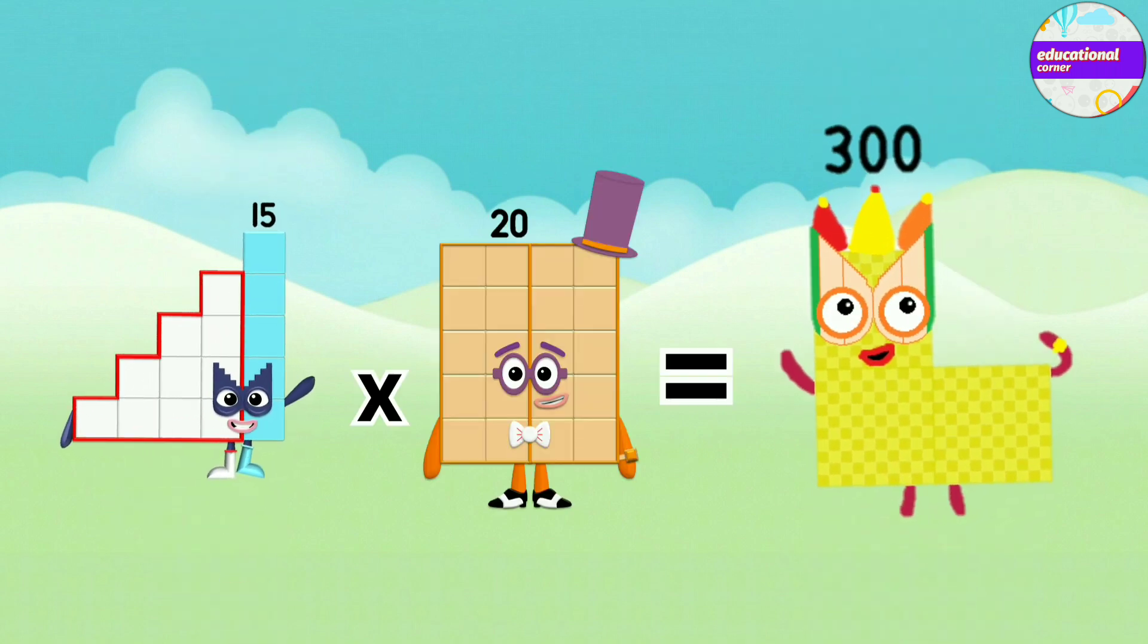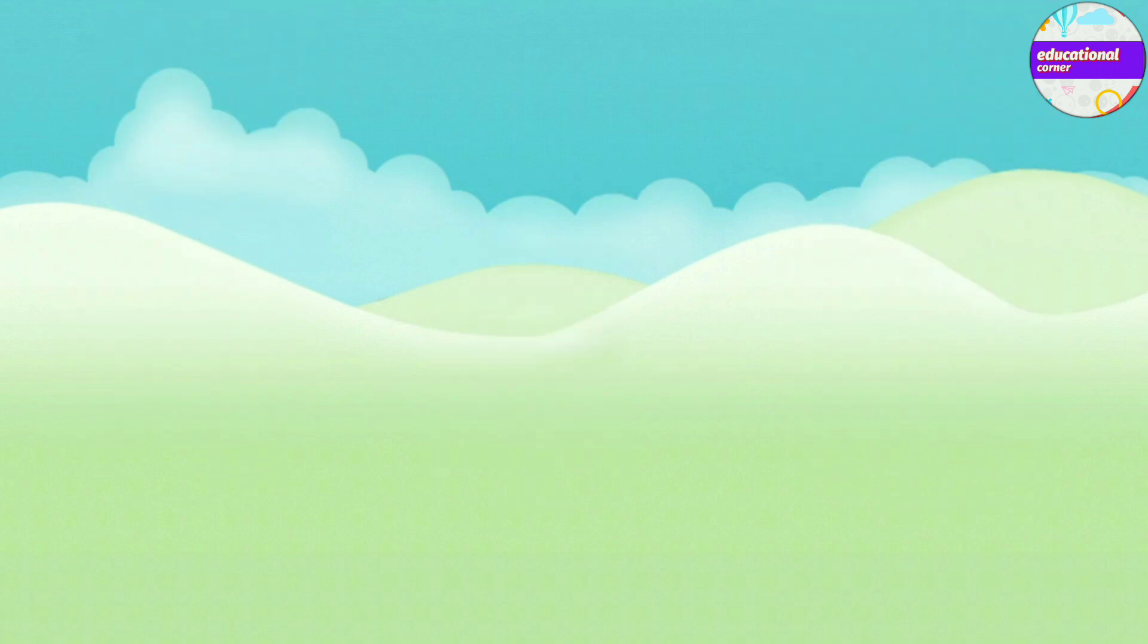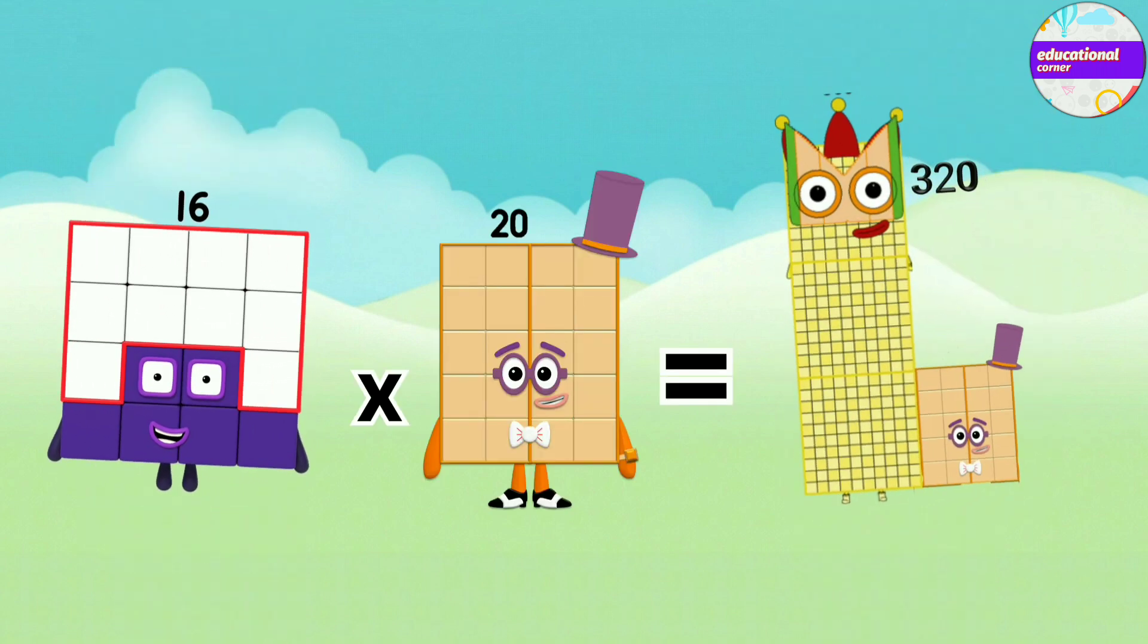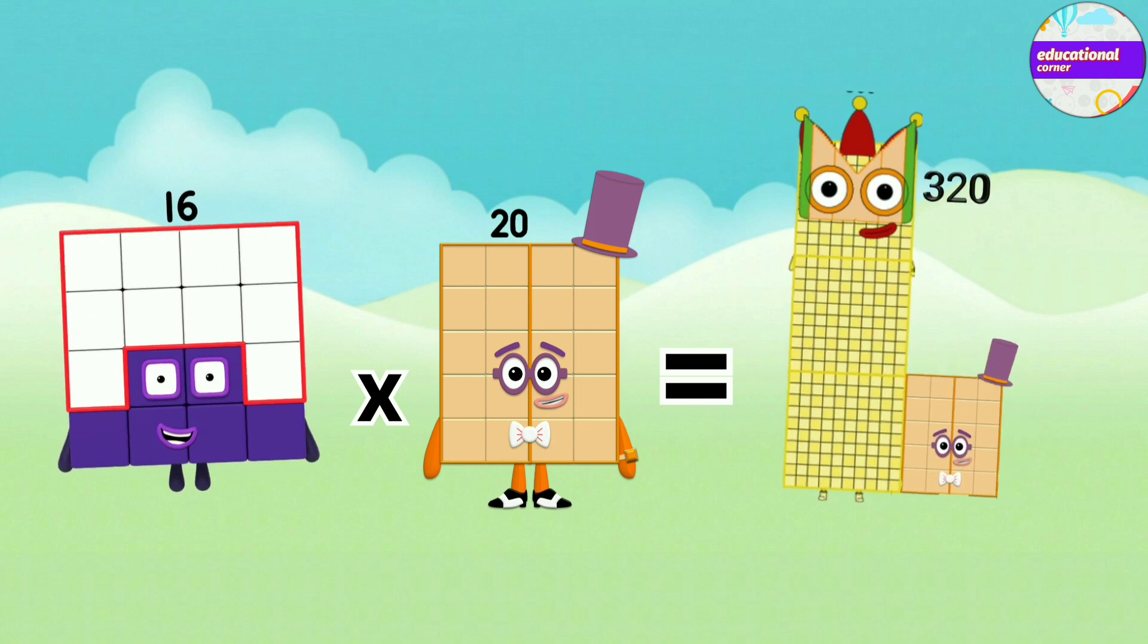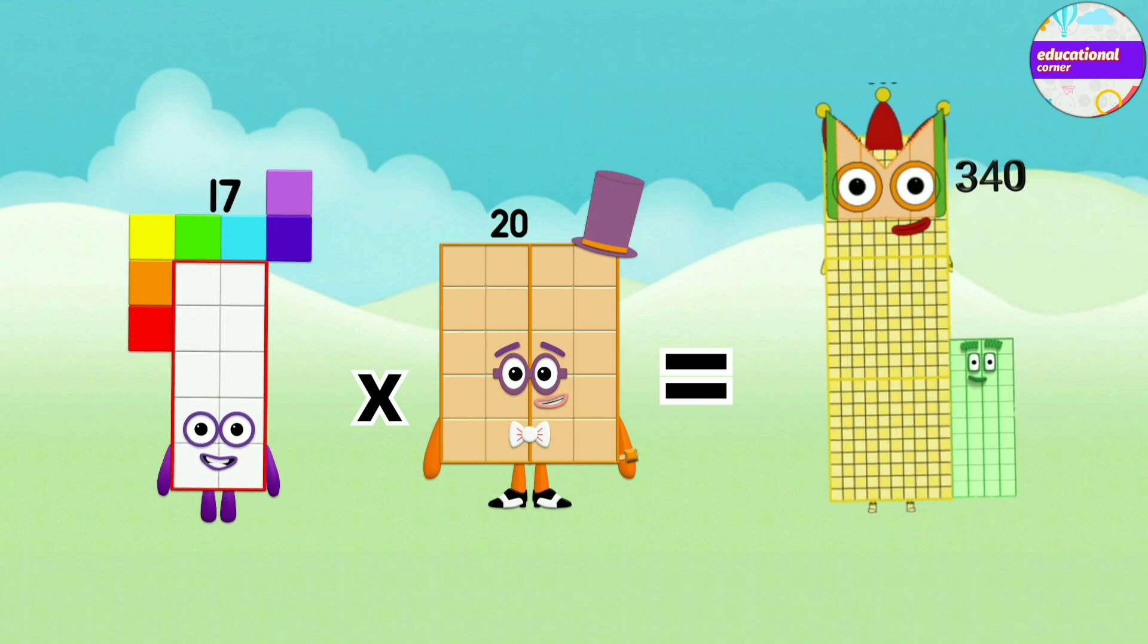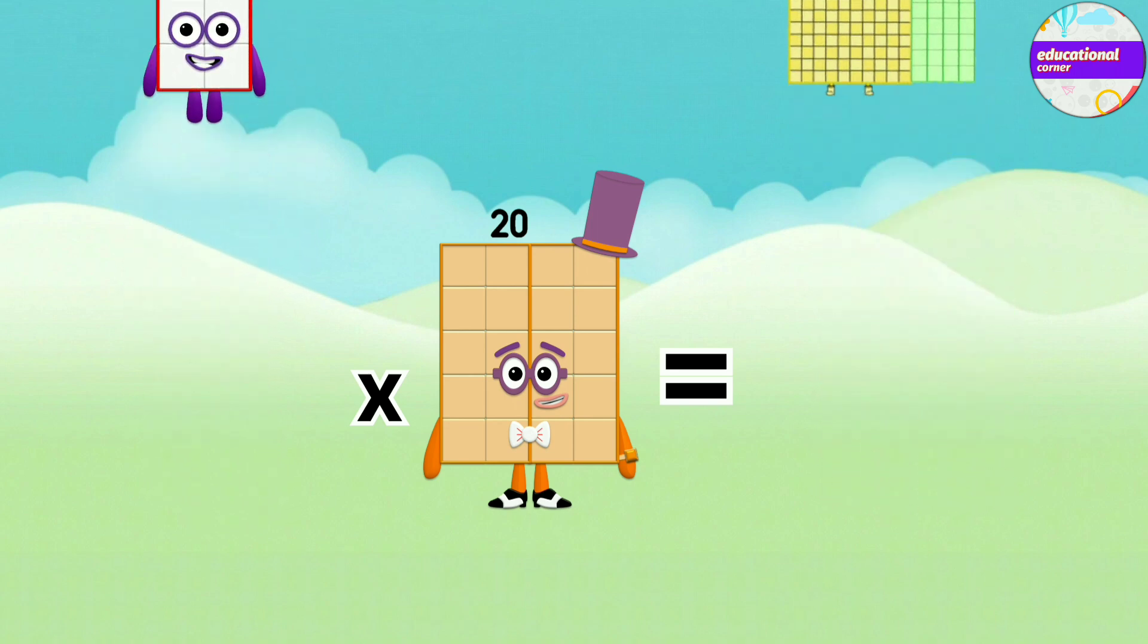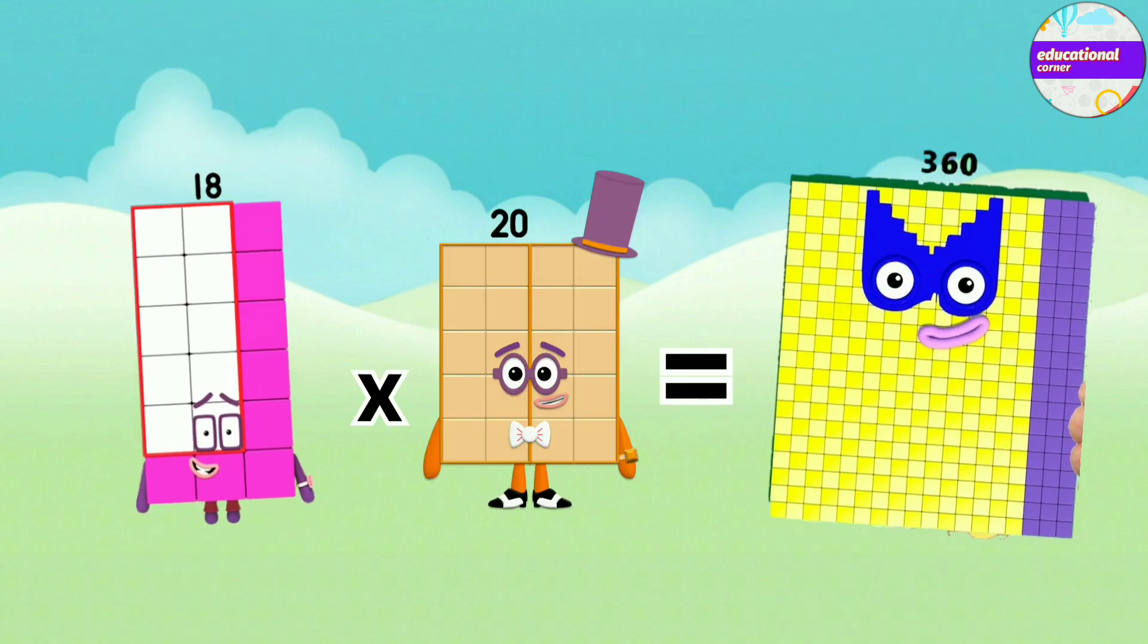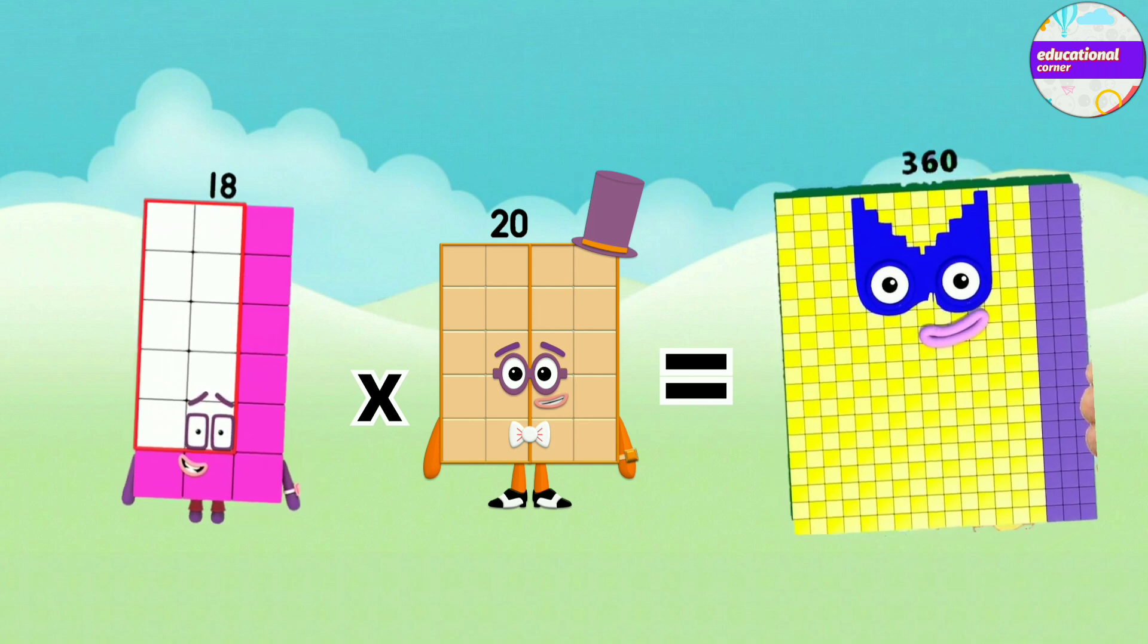20 x 15 equals 300, 20 x 16 equals 320, 20 x 17 equals 340, 20 x 18 equals 360.